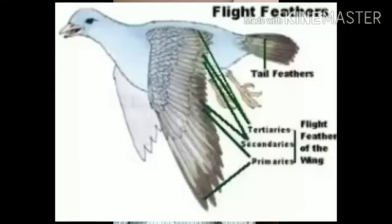Flight feathers are also attached to the wings of the birds. Feathers which are found on the wings of the birds are called flight feathers, and they are used while flying. All types of feathers help birds in flying, but flight feathers specifically are the feathers found on the wings of the birds.